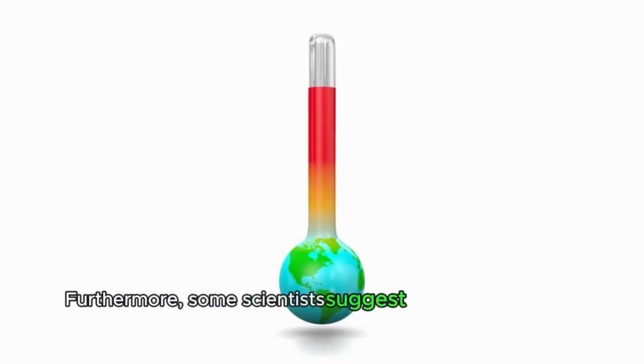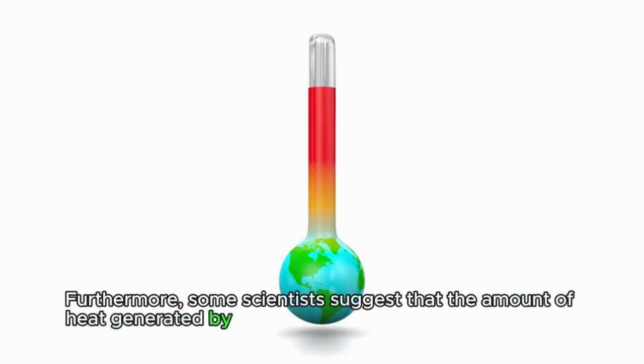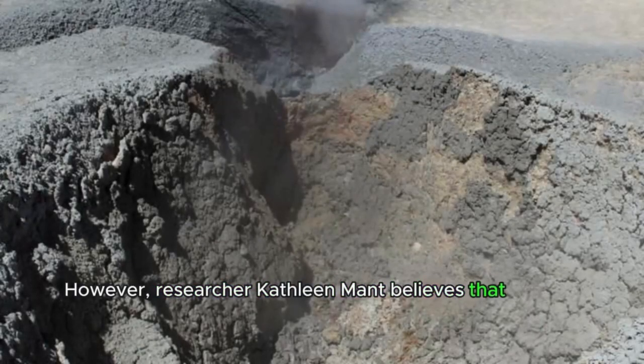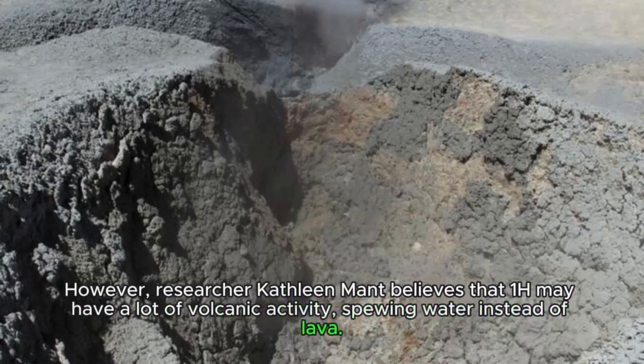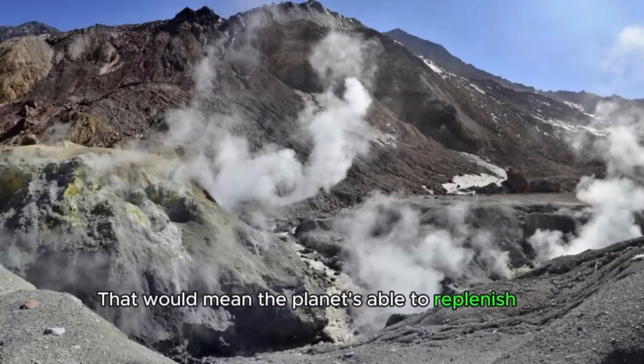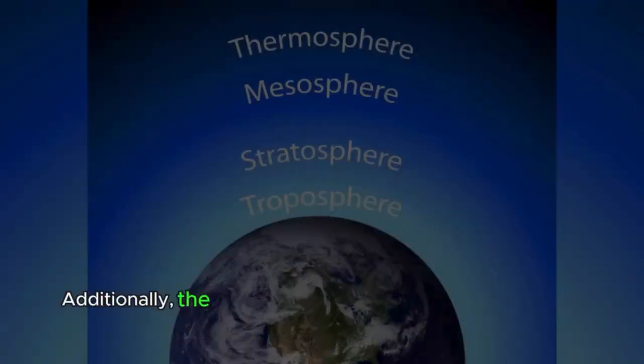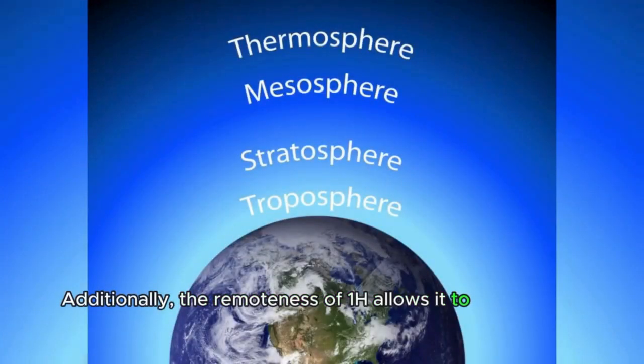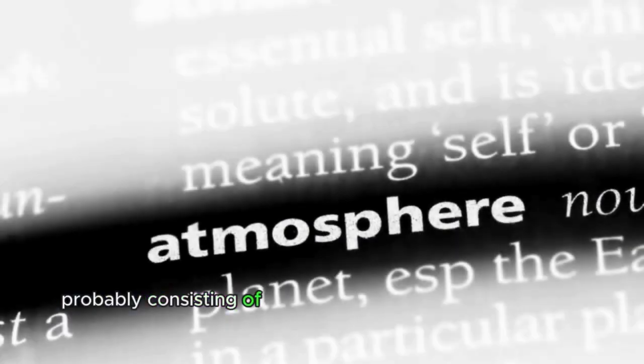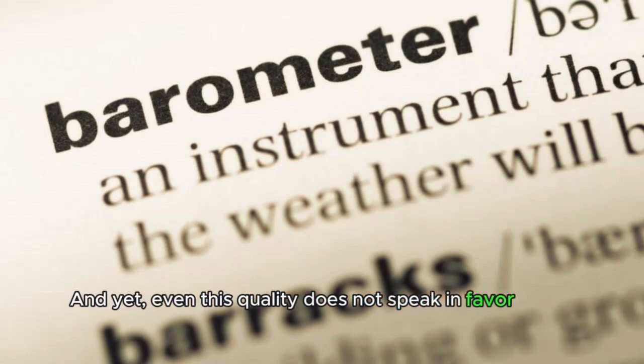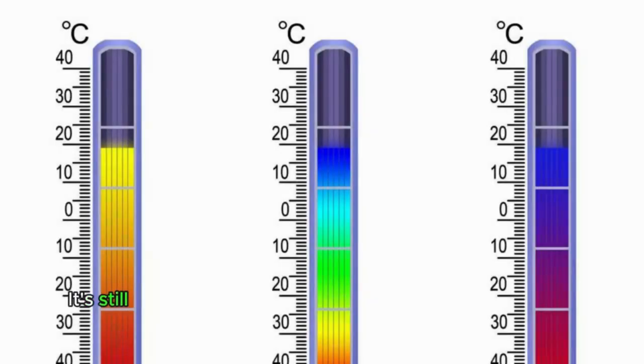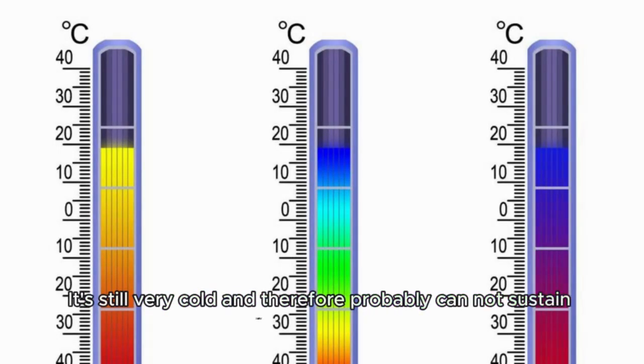Furthermore, some scientists suggest that the amount of heat generated by gravity would also be quite low for 1h. However, researcher Kathleen Mant believes that 1h may have a lot of volcanic activity, spewing water instead of lava. That would mean the planet's able to replenish its atmosphere due to the emitted gases. Additionally, the remoteness of 1h allows it to firmly retain its atmosphere, probably consisting of nitrogen and methane like on Titan, since the stellar wind hardly touches it. And yet, even this quality does not speak in favor of life on the planet. It's still very cold and therefore probably cannot sustain water in liquid form.